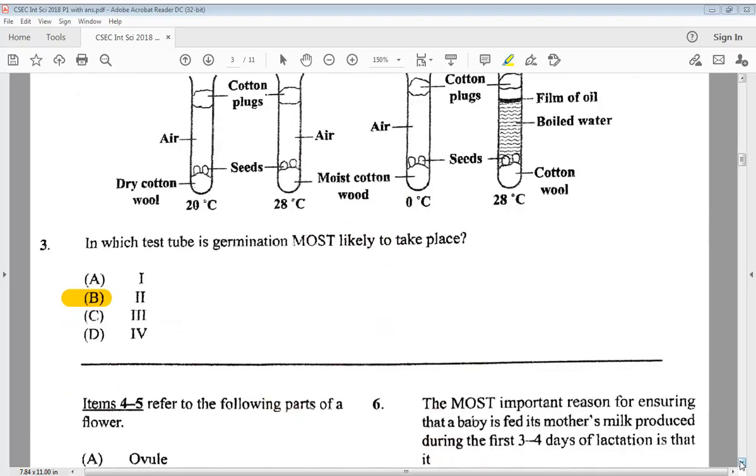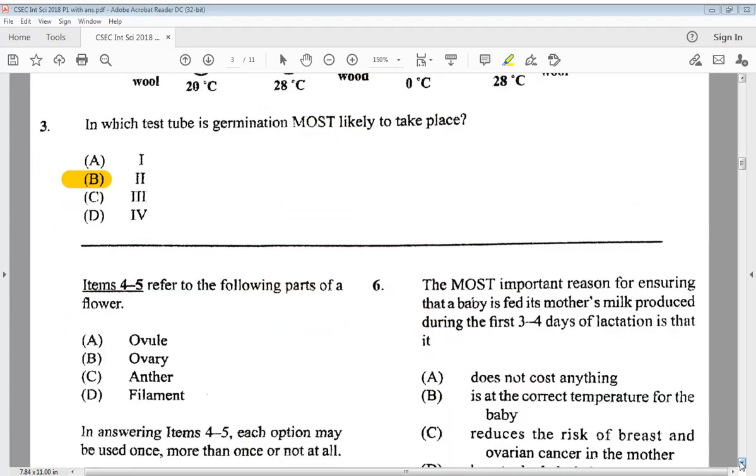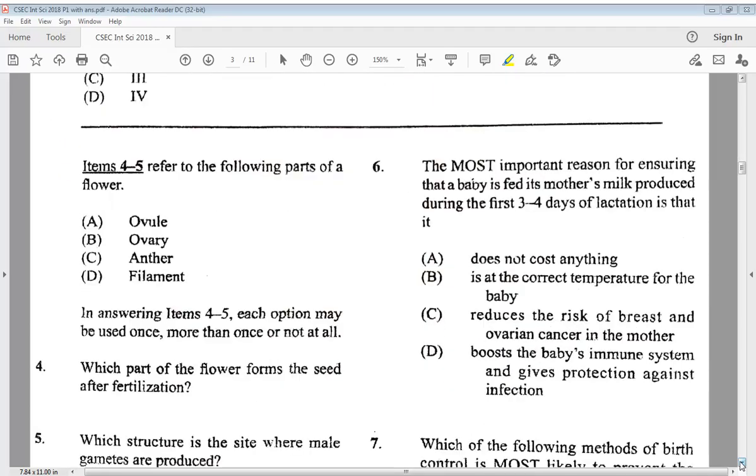Let's go to item 4 to 5. Item 4 to 5 refer to the following parts of a flower. A, ovule. B, ovary. C, anther. D, filament. In answering items 4 to 5, each option may be used once, more than once, or not at all. Question 4. Which part of the flower forms the seed after fertilization? We know that is A, ovule.